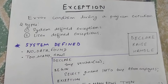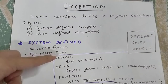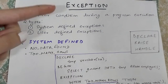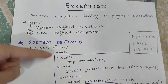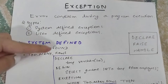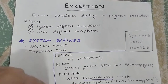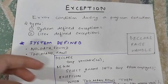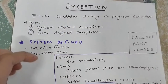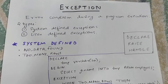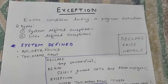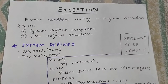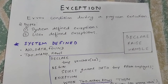Basically an exception will disrupt the normal flow of the program. Whenever a program is being executed, it will disrupt the normal flow. It will throw some error which will be captured in the exception block, and the programmer can find out what the error was.